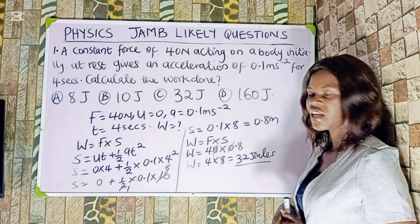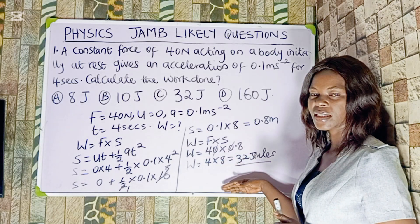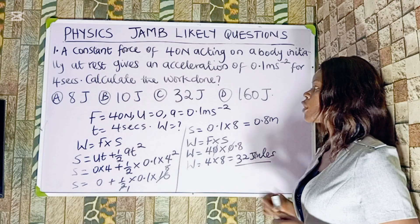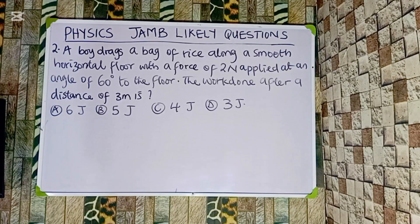This is how you solve a work done question when you have acceleration but need distance — first find the distance using kinematics, then apply it to force to get work done. The correct option is C. Next question: a boy drags a bag of rice along a smooth horizontal floor with a force of 2 newtons applied at an angle of 60 degrees to the floor. The work done after a distance of 3 meters is: Option A: 6 J, Option B: 5 J, Option C: 4 J, Option D: 3 J.